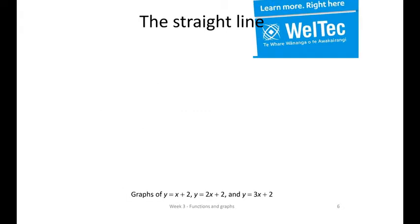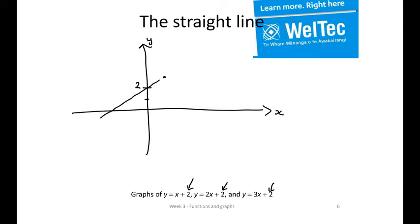These three graphs, the thing that they have in common is the y-intercept. Each of them cut through at 2. The first one has a slope of 1, so it's 1 up and 1 out. The second one has a slope of 2, so it goes 2 up and 1 out, but it goes through the same point on the y-axis. And the third one has a slope of 3, so it goes 3 up and 1 out.